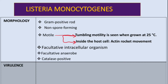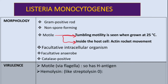Now let's talk about the virulence factors. There are two main virulence factors. The first one is the flagella — since it's motile, this means it is an H antigen. The second one is hemolysin, which is more like a streptolysin O. It is firstly heat labile, meaning it's easily destroyed by heat, and it's antigenic.